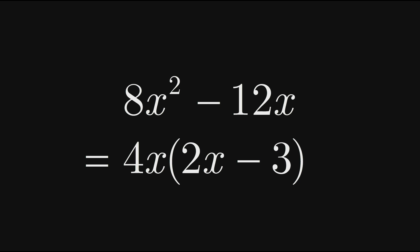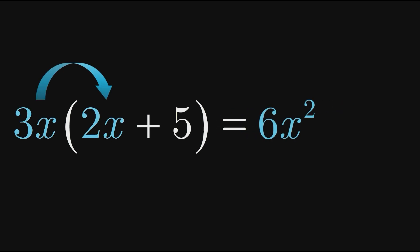To get an idea of how common factoring works, let's start by multiplying out a factored expression, for example 3x times 2x plus 5. Here we can use the distributive property, first multiplying 3x by 2x which gives 6x squared, and then adding 3x times 5 which is 15x.